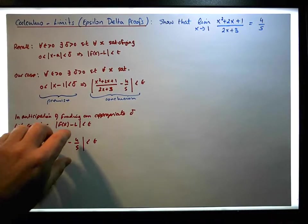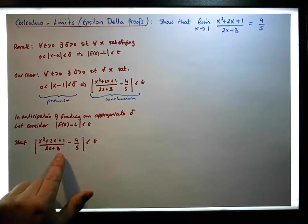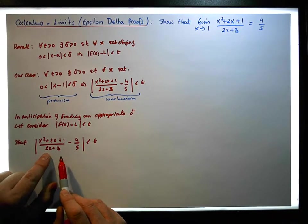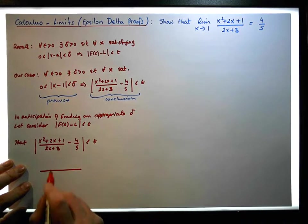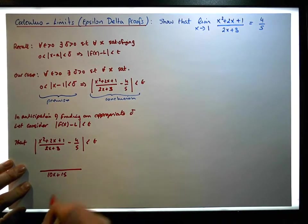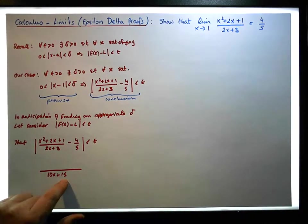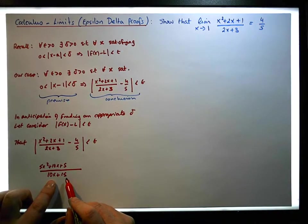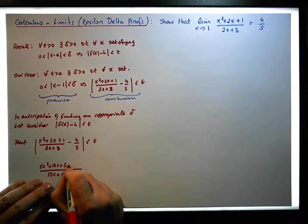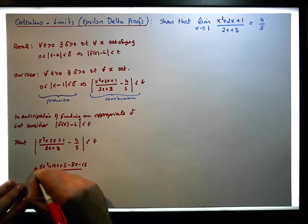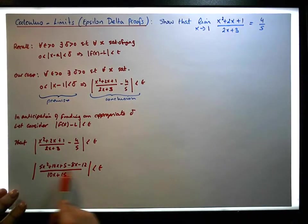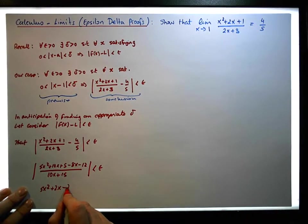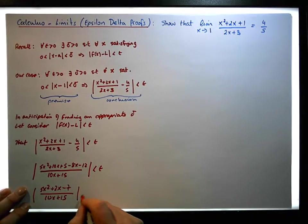We'll reduce this down with algebra by getting a common denominator, which is going to be 5 times 2x plus 3, effectively 10x plus 15. Then 2x plus 3 goes into 10x plus 15 five times, giving us 5x squared plus 10x plus 5, and 5 divides into 10x plus 15 giving 2x plus 3 times, so it's minus 4 times 2x plus 3, which gives minus 8x minus 12. Working this through, we get 5x squared plus 2x minus 7, all over 10x plus 15, and the absolute value of that must be less than epsilon.